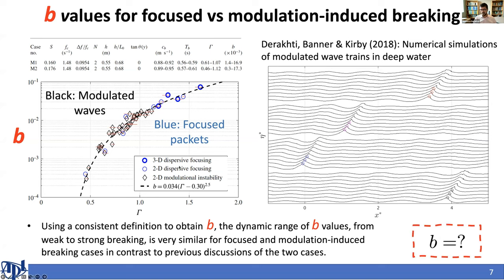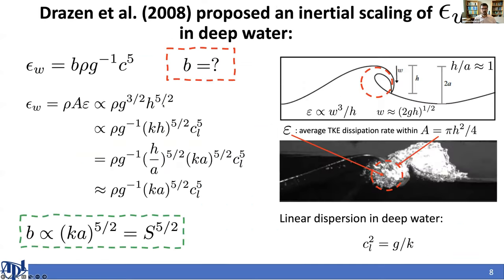I emphasized it in the 2018 paper. I did some numerical experiments for the cases, the modulated wave cases used by banner group. Typically you would get multiple breaking events. If you use the consistent definition for the local dissipation rate for individual crests and calculate B and compare it with the dispersive focusing cases, you would get the same range of B values. It shows that the dynamic range of B values, the breaking strength parameter, is the same for focused and modulated induced breaking cases, which is great. But this is in contrast to previous discussions about the difference between these two cases. Still we have significant range of B values. So still we need a formulation for B.